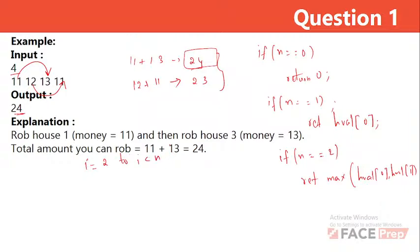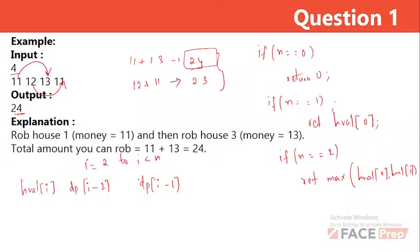For each house from index 2 onward, I calculate the maximum amount considering two options: either rob the current house and add it to dp[i-2] (the best value from two houses ago, since adjacent houses can't both be robbed), or skip the current house and take dp[i-1] (the best value from the previous house). I set dp[i] to the maximum of these two options. After the loop, dp[n-1] holds the maximum amount obtainable.